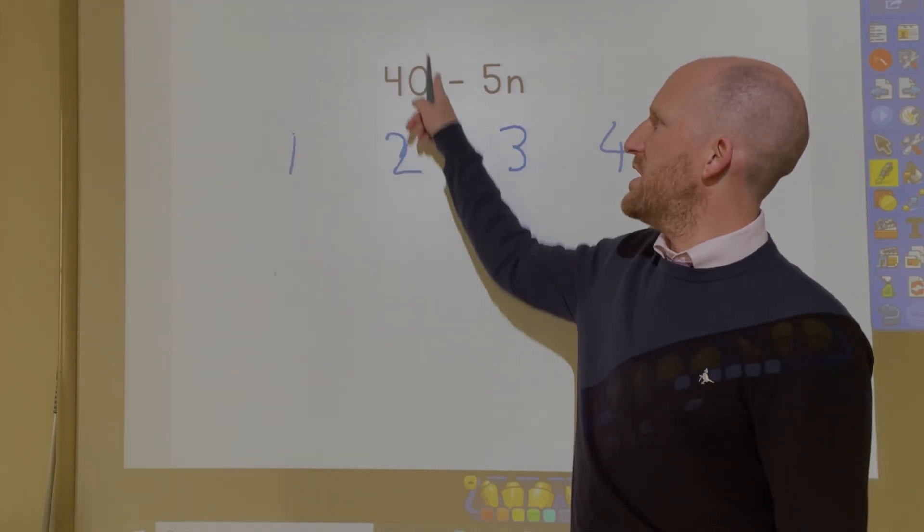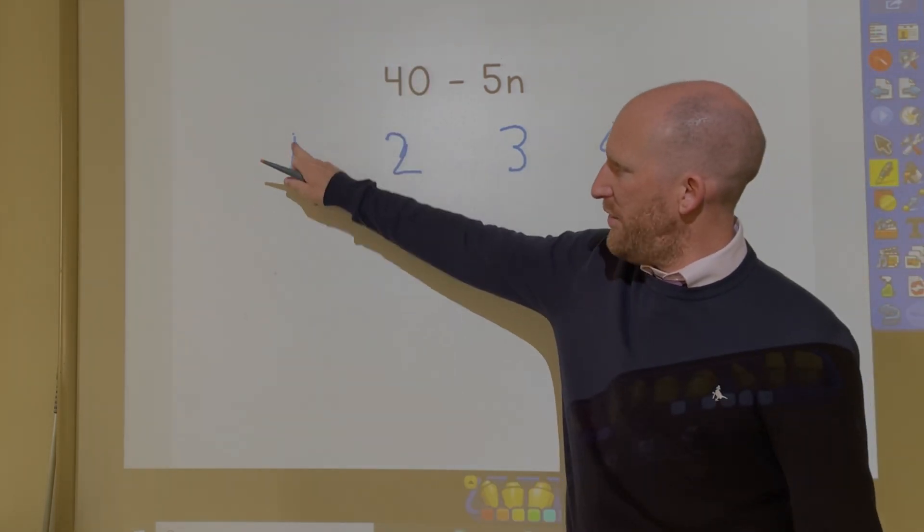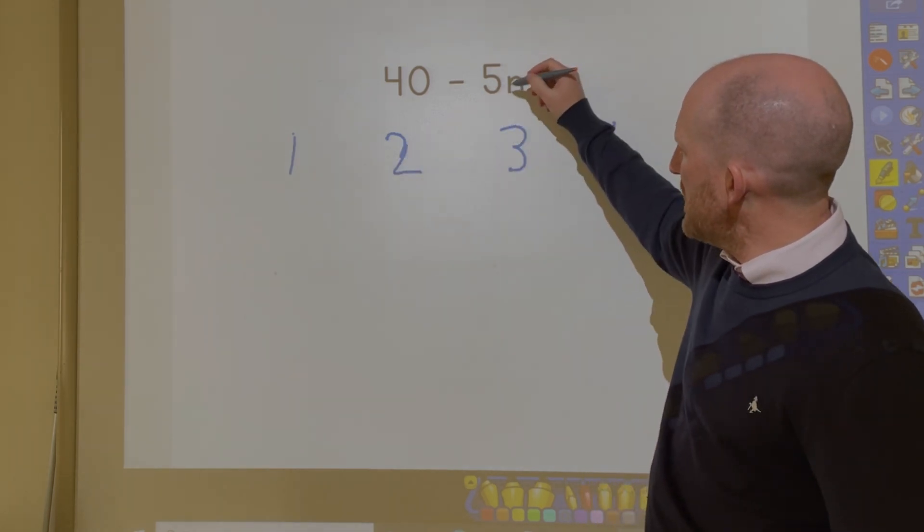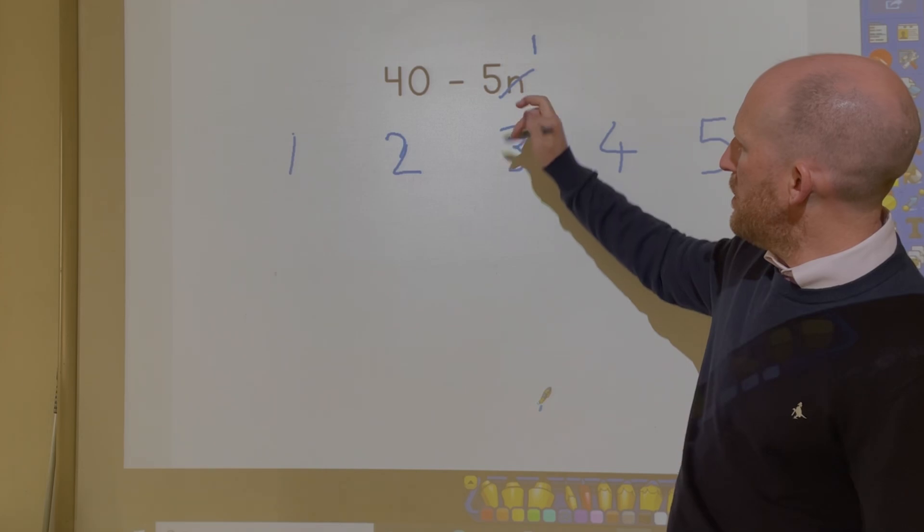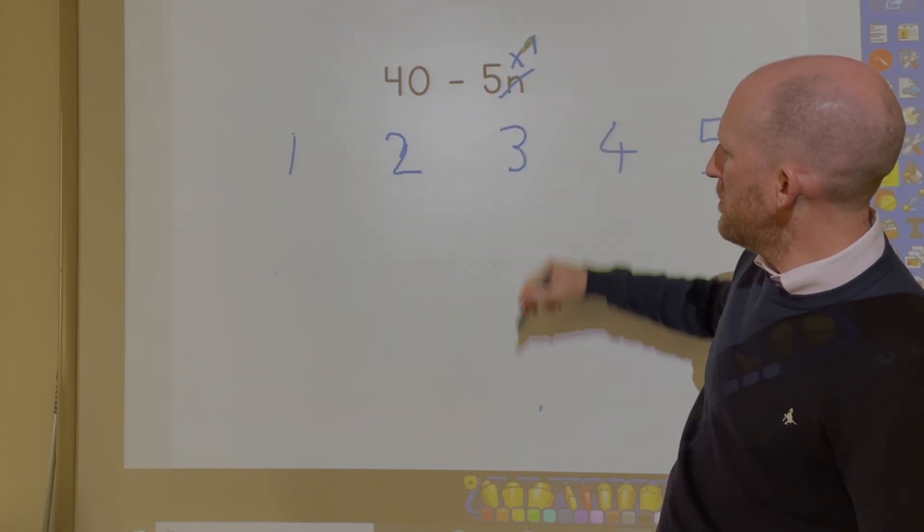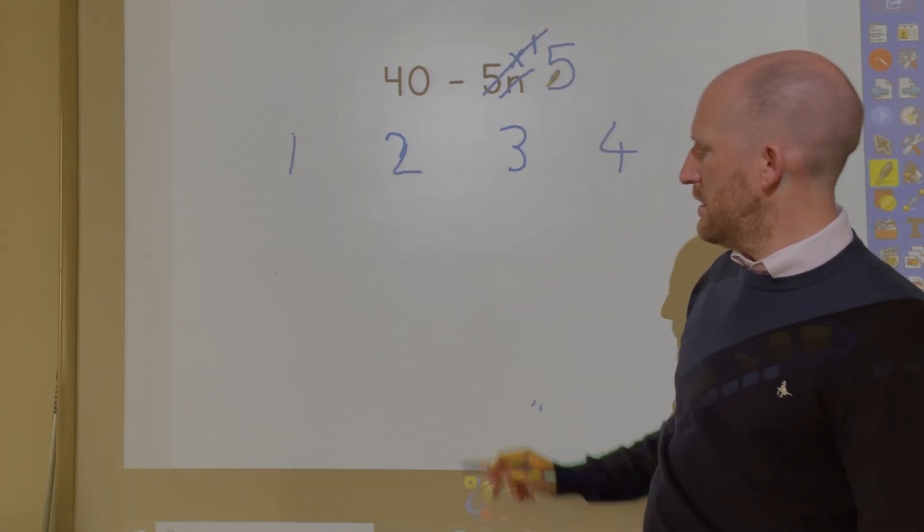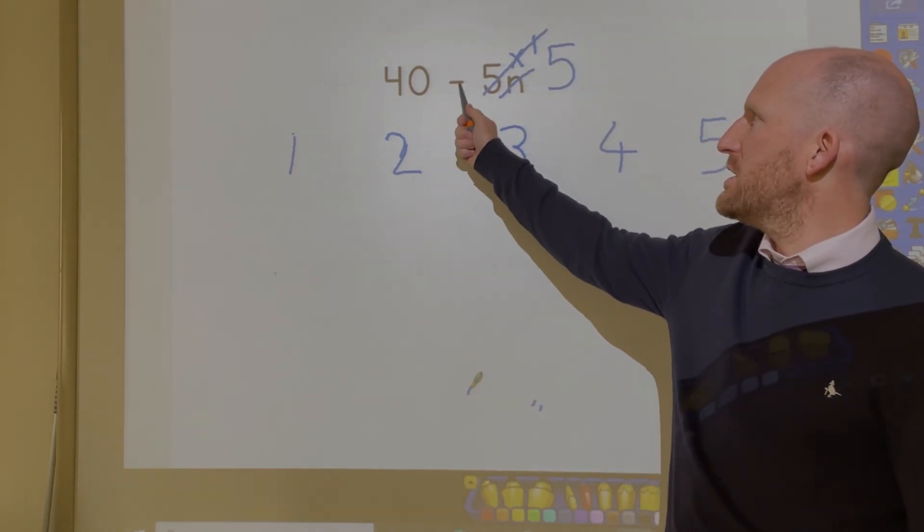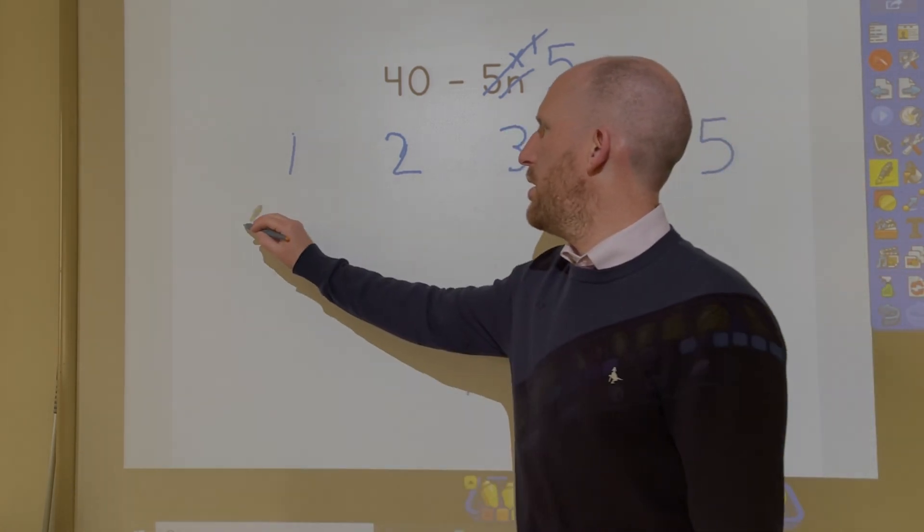So I've already got my starting number, so 40. I want to find out the first number in the sequence, so I'm going to replace n with 1. And I need to multiply these two together. Now I have 5 times 1 makes 5. And then it's easy. 40 take away 5 makes 35.